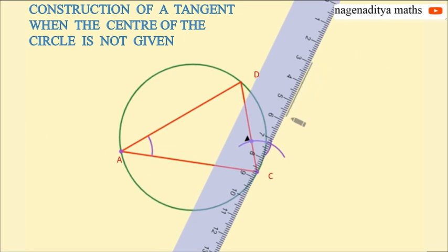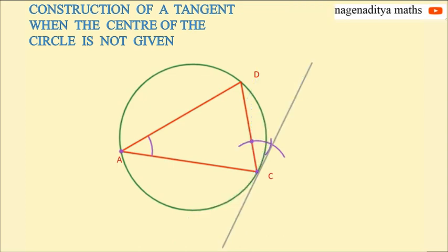So this is the required tangent to the given circle. So basing on converse of alternate segment theorem, here the two angles are equal, hence it must be a tangent.